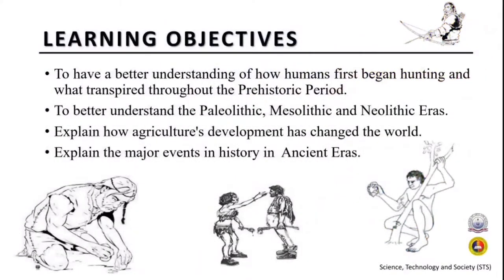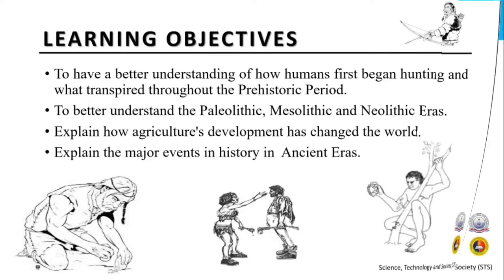At the end of this lesson, students would have a better understanding of how humans first began hunting and what transpired throughout the prehistoric period. Students would better understand the Paleolithic, Mesolithic, and Neolithic eras. Students would be able to explain how agriculture's development has changed the world and explain the major events in history in ancient eras.